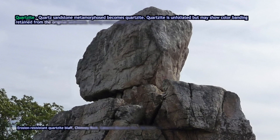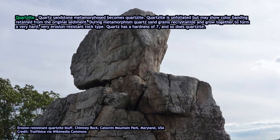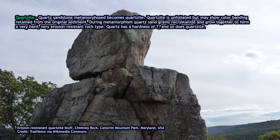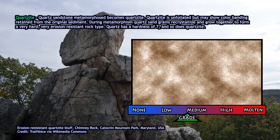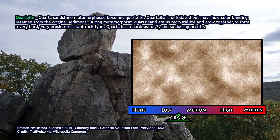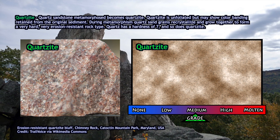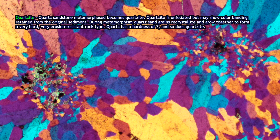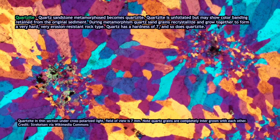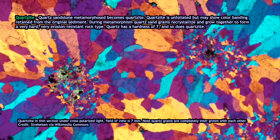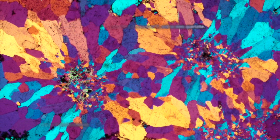Now for non-foliated metamorphic rocks — the two major types you're going to run into are quartzite and marble, classic building materials humans have used for centuries. Quartzite is metamorphosed sandstone. If you take sandstone and compress it during a metamorphism event, the quartz grains are pushed harder together, compacted, and they recrystallize to grow together at the millimeter scale. Quartzite is one of the toughest metamorphic rocks — quartz already has a hardness of seven — and you take a sedimentary rock made of quartz grains and forge it into one mass of intergrown crystals.